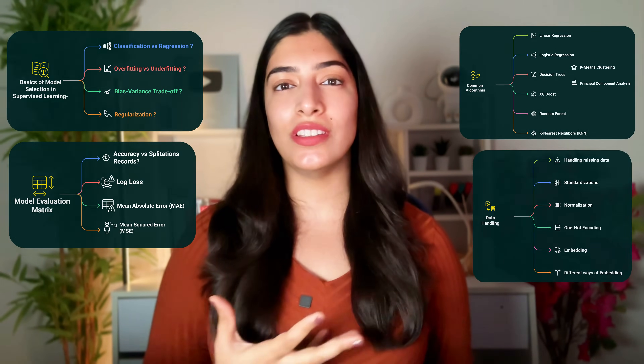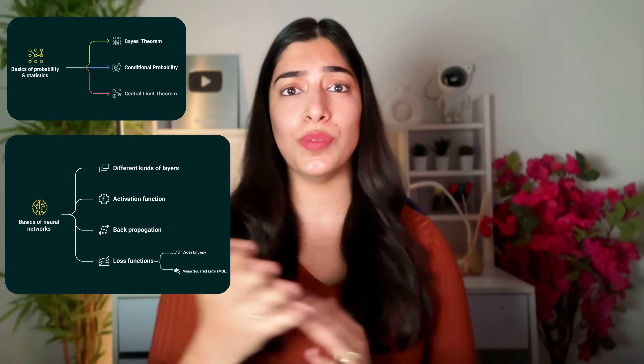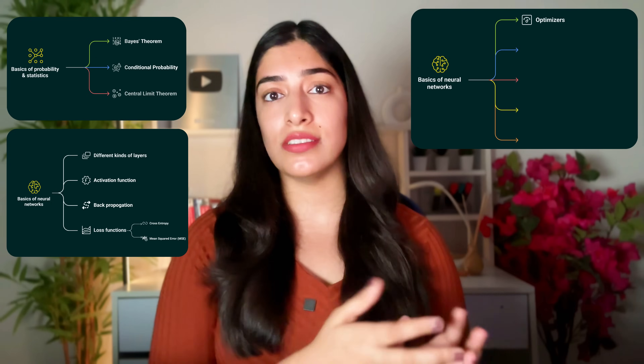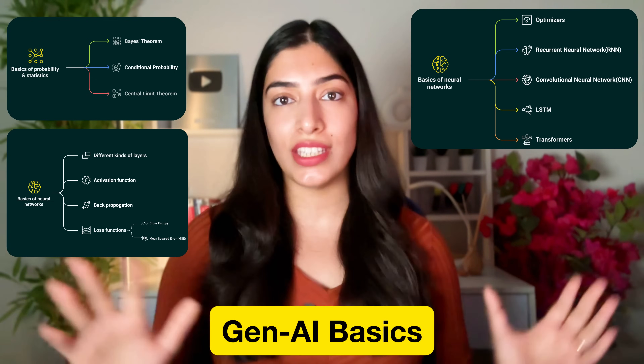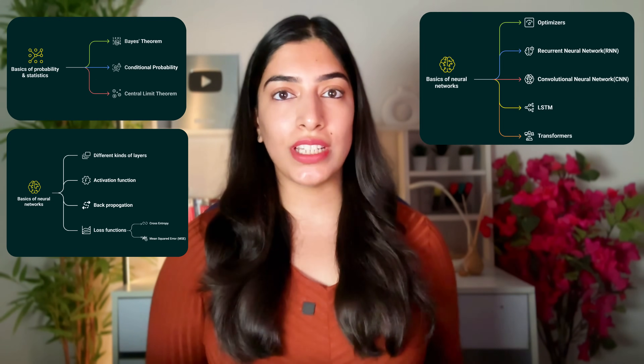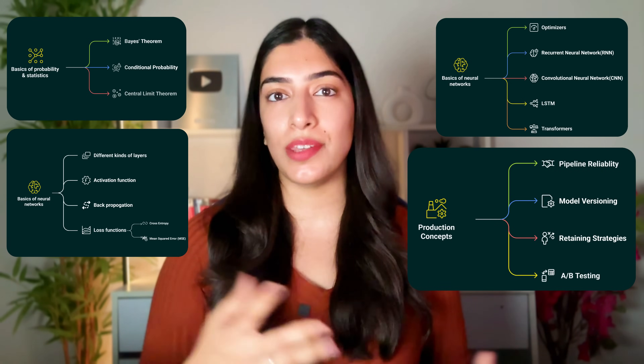You could also be asked about probability and statistics: Bayes theorem, conditional probability, the central limit theorem. Probability and stats is obviously very important. If the role involves deep learning, expect questions on neural network basics, types of layers, activation functions, back propagation, loss functions like cross-entropy and MSE, optimizers, RNNs, CNNs, LSTMs, transformers, and other Gen AI basics. Additionally, production concepts like pipeline reliability, model versioning, retraining strategies, and A/B testing may come up.